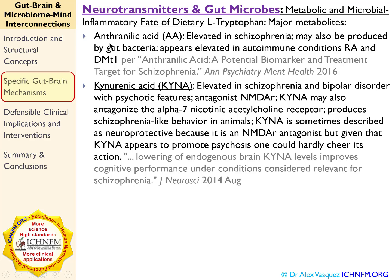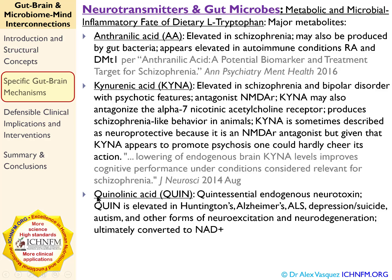So we want to lower anthranilic acid, we want to lower kynurenic acid, and we definitely want to lower quinolinic acid, because quinolinic acid kills brain cells — it is very, very toxic. Anthranilic acid feeds into the kynurenine pathway; kynurenic acid is a dead-end branch off of the kynurenine pathway. Tryptophan goes to kynurenine, kynurenine to anthranilic acid and also to kynurenic acid, and ultimately quinolinic acid. We want to avoid quinolinic acid.